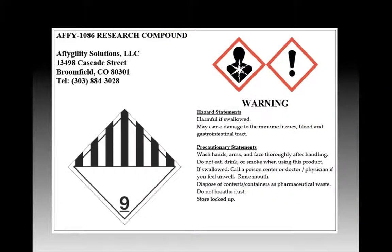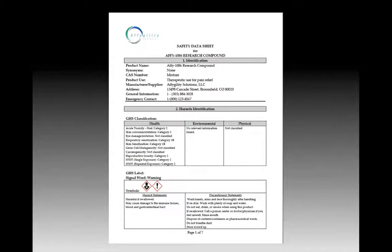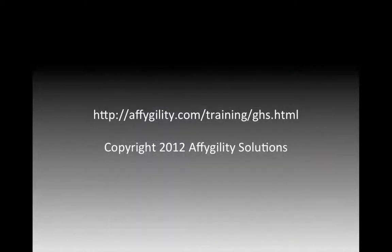We'll then go through an example label and describe all of the key labeling elements. And finally, we will review each of the 16 sections of the safety data sheet format that is required by GHS.